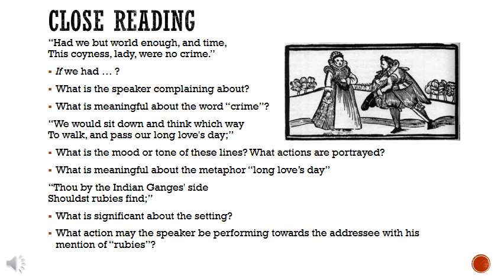Now it's time to go through in that detailed fashion and really investigate line by line, sentence by sentence, phrase by phrase what this speaker is saying. 'Had we but world enough in time, this coyness lady were no crime.' We should note that he's starting with an implied 'if' — if we had world enough in time, but of course we don't, or maybe we don't; that seems to be the implication. What is he complaining about? She's being coy, she's refusing him. Notice that he calls it a crime — not literally breaking the law, but it gives us a sense of his feeling towards her behavior. He doesn't like this; he wishes she would respond.